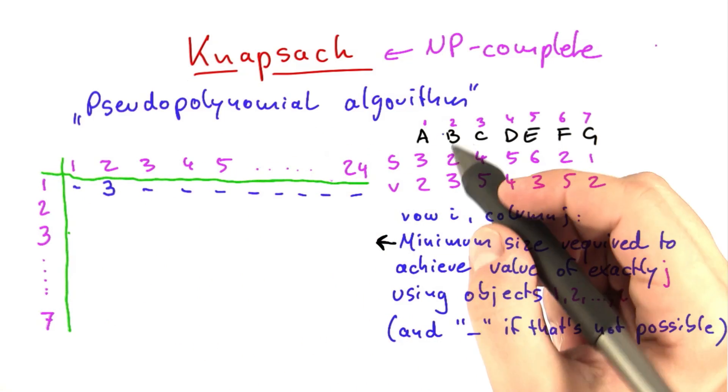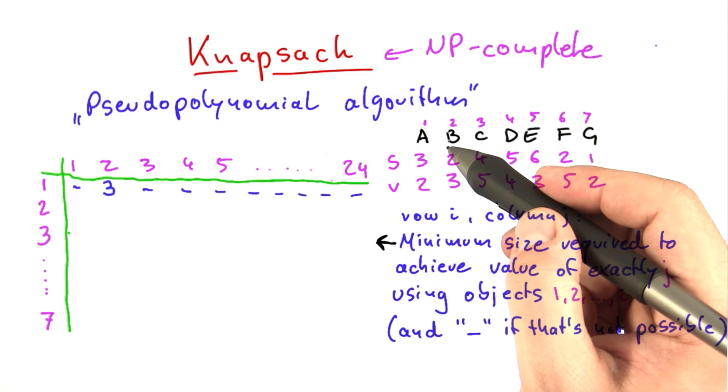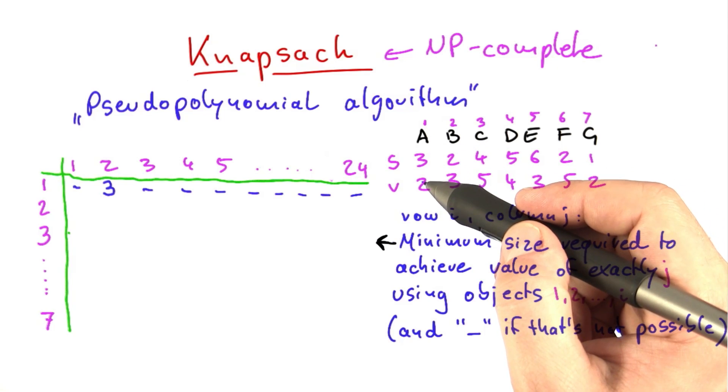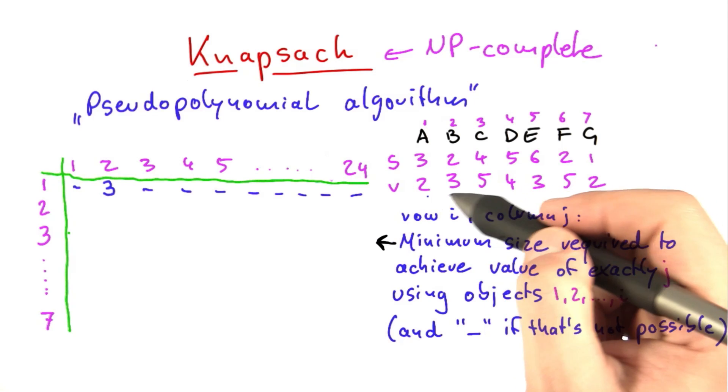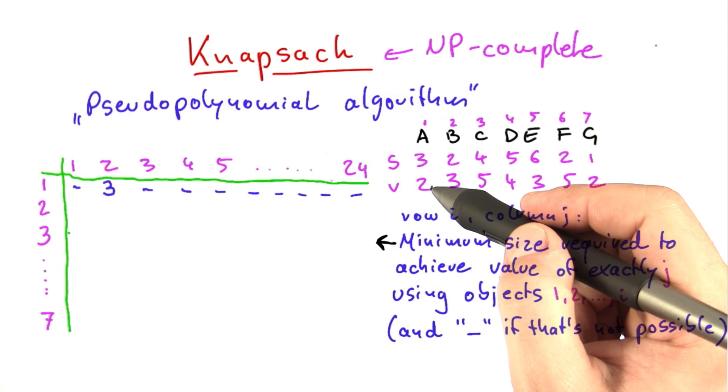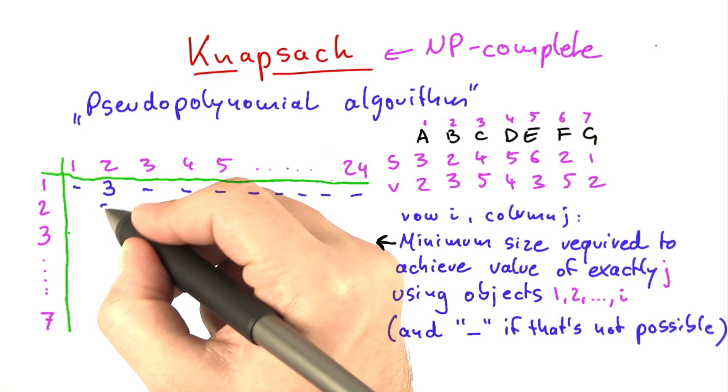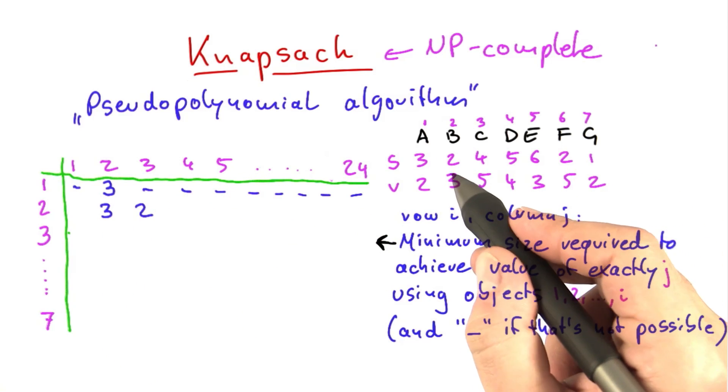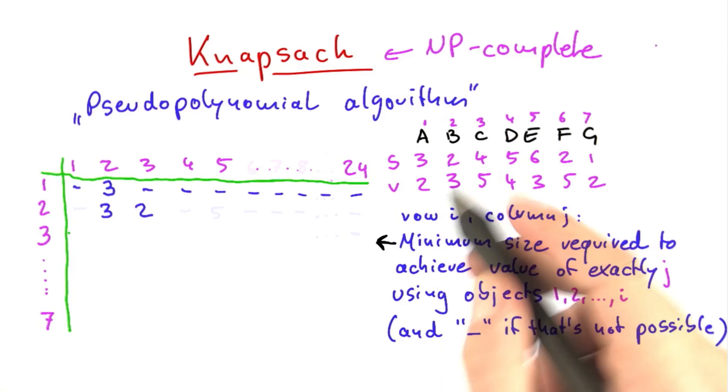Second row, we have two objects available. We have objects a and b available. So what we can achieve is a value of 2, a value of 3, and a value of 5. Now for a value of 2, we need size 3 again. For a value of 3, we can do that with size 2. And for a value of 5, we need size 5.